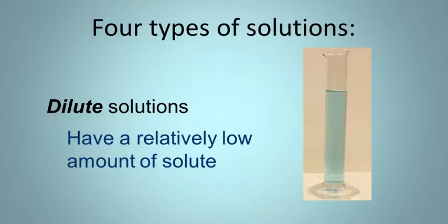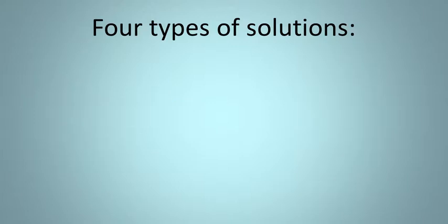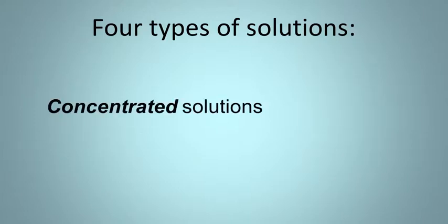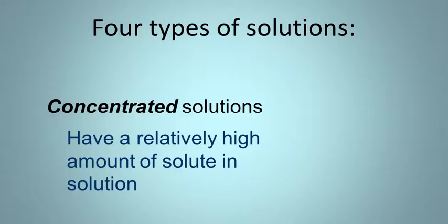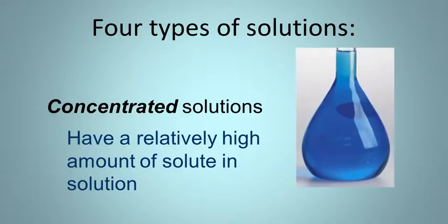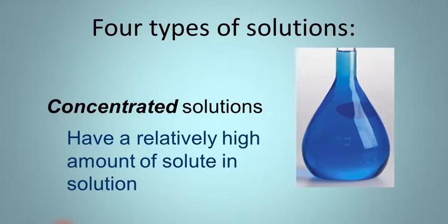If we take a dilute solution and we keep adding more solute, we'll have what we would call a concentrated solution, where now you have a relatively high amount of solute in solution. Here we are back to our copper sulfate solution — it's still blue, but now it's a deeper color of blue, which shows us a higher concentration. So normally you can tell for colored solutions based upon the intensity or deepness of the color.